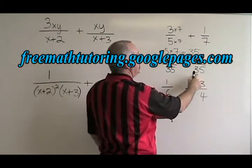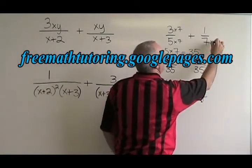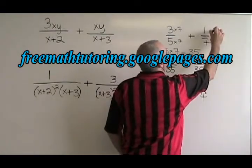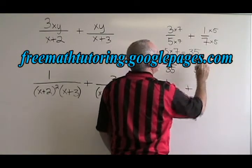How do we turn 7 into 35? We multiply it by 5. If we multiply the bottom by 5, we have to multiply the top by 5, and our new numerator is 5.